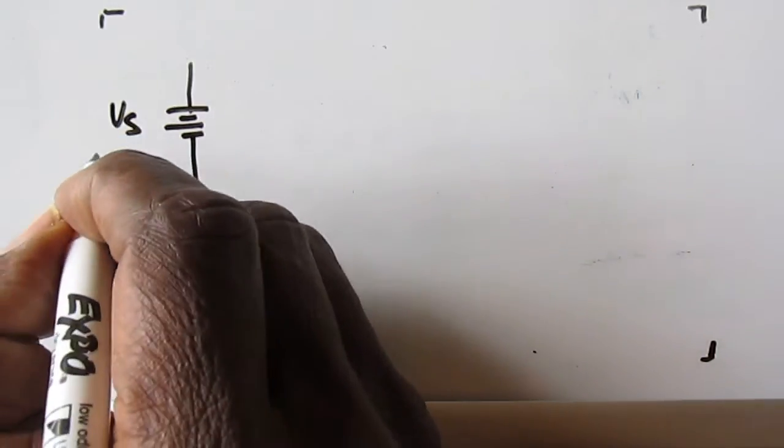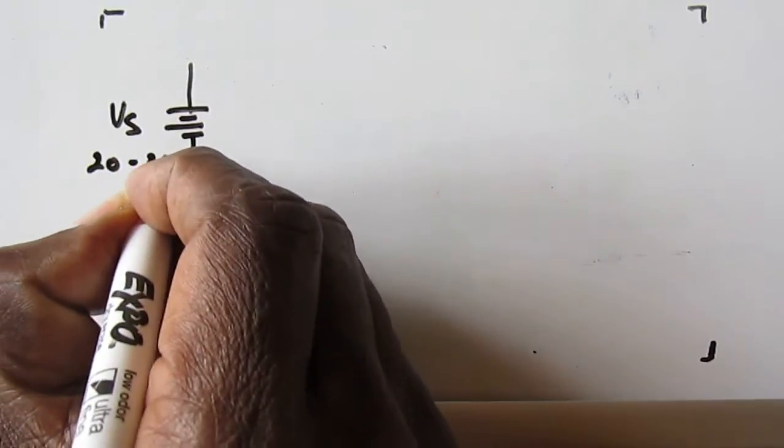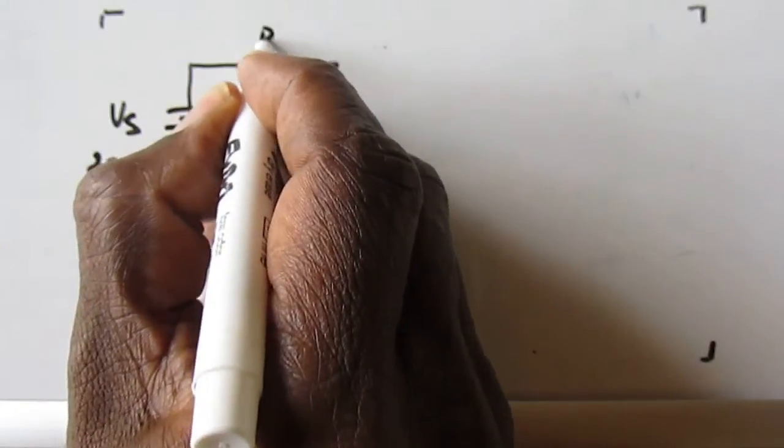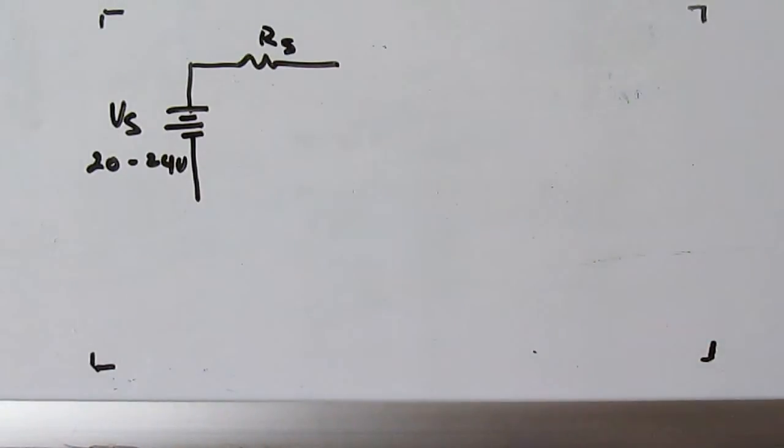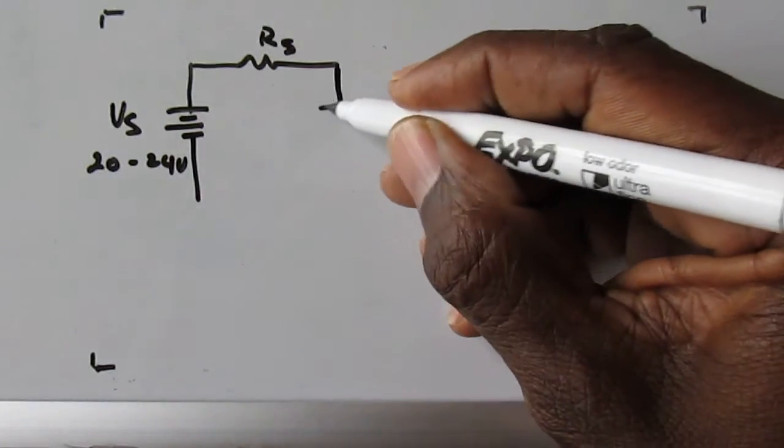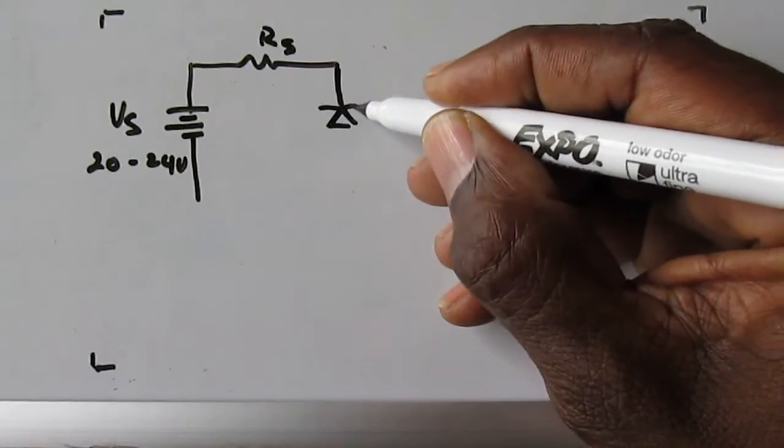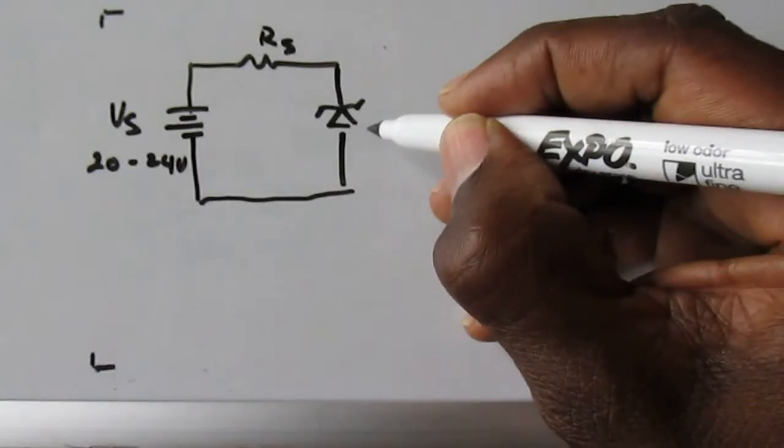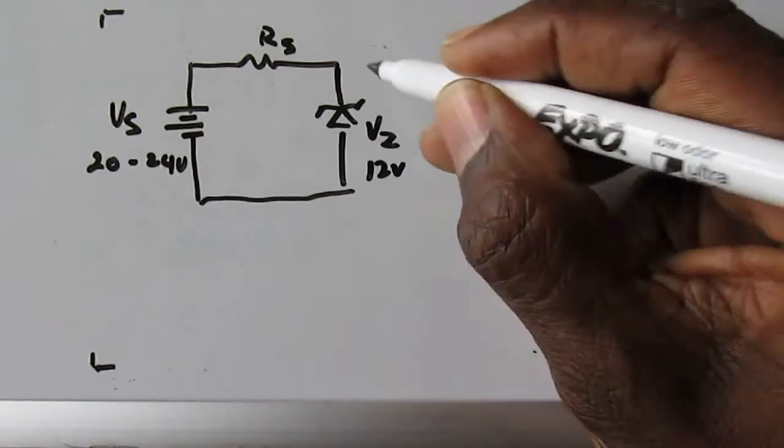Alright, so we are going to draw the circuit. VS, 20 to 24 volts. RS. VZ, 12 volts.